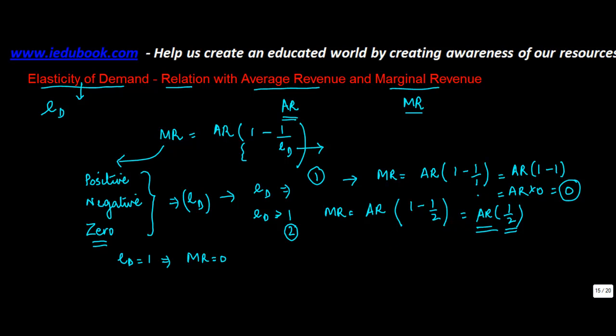Now because average revenue is a positive number, when ED is greater than 1, it implies that marginal revenue is positive.